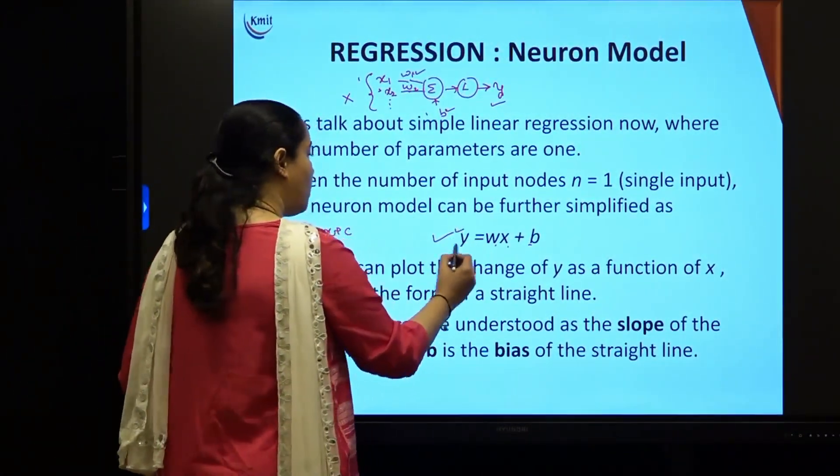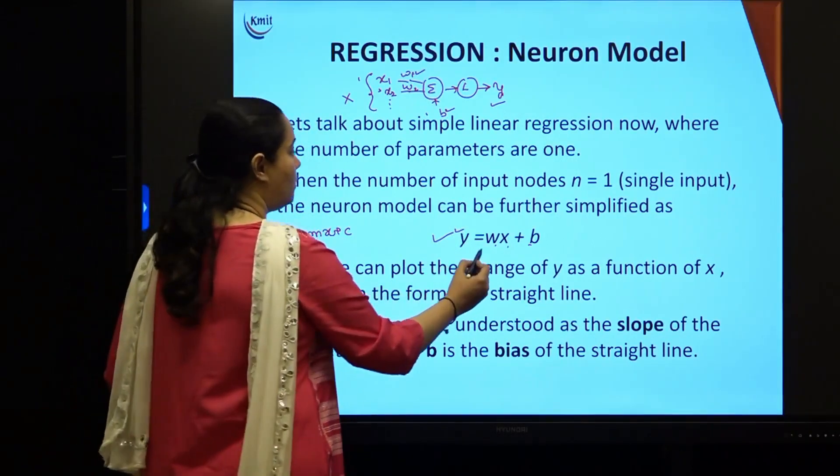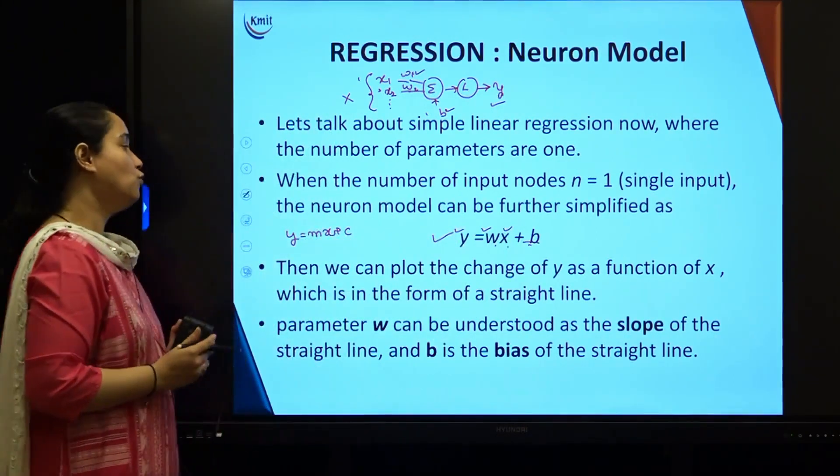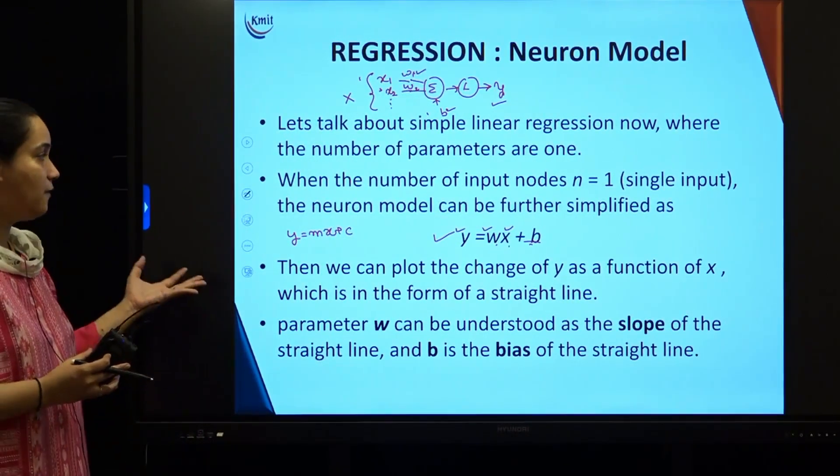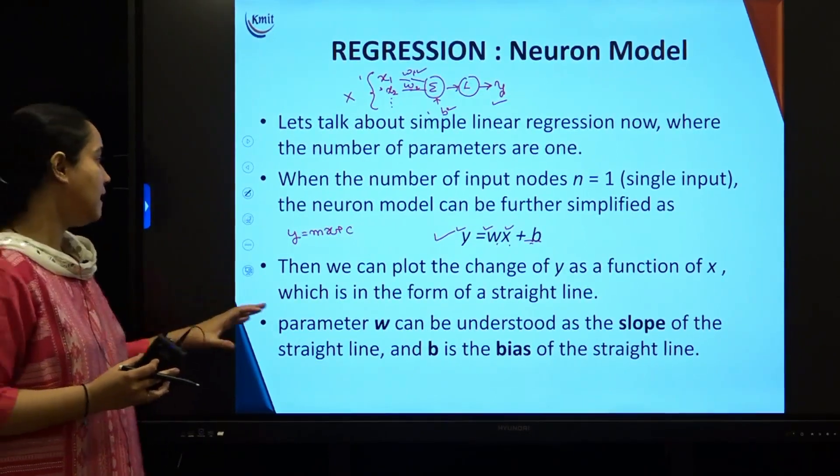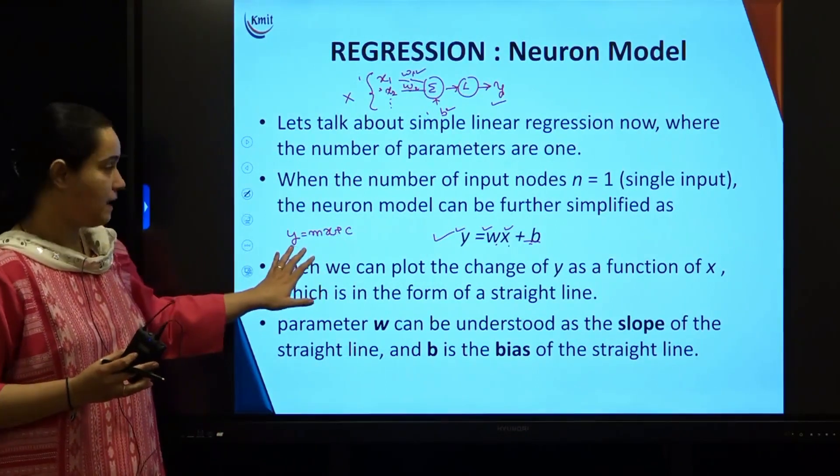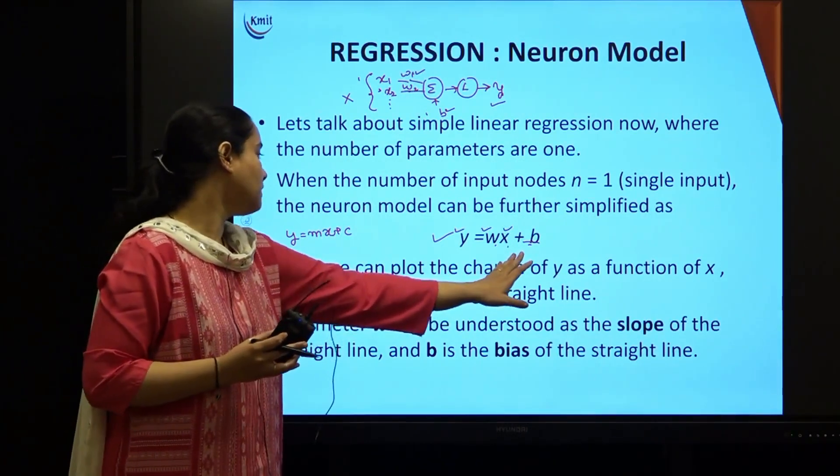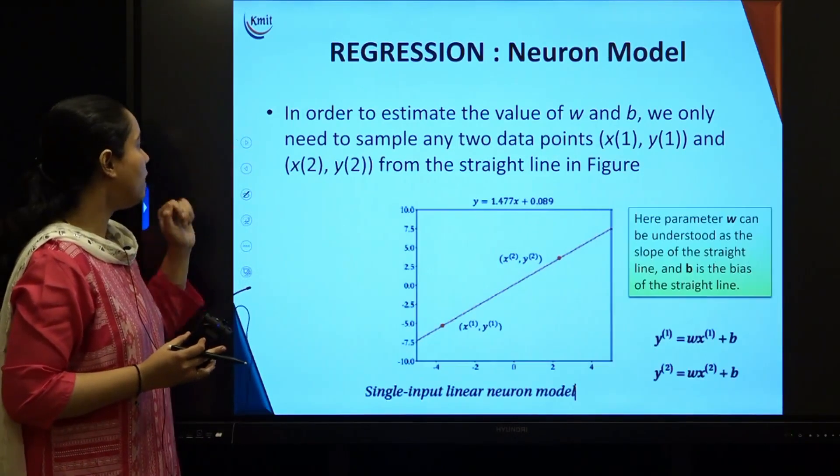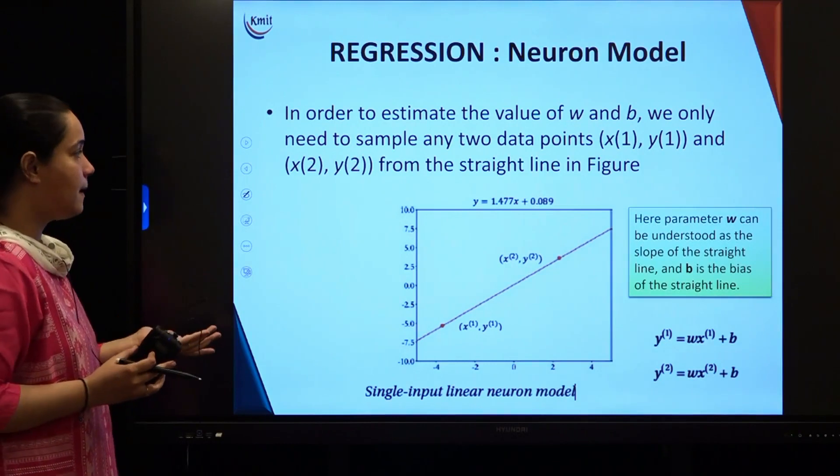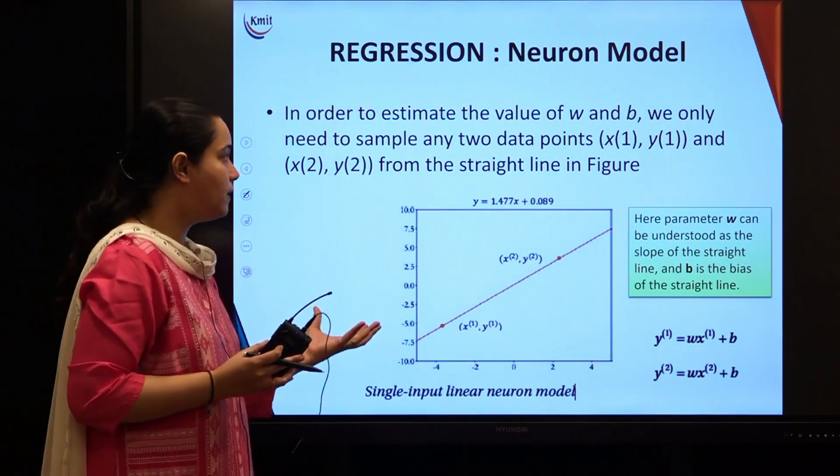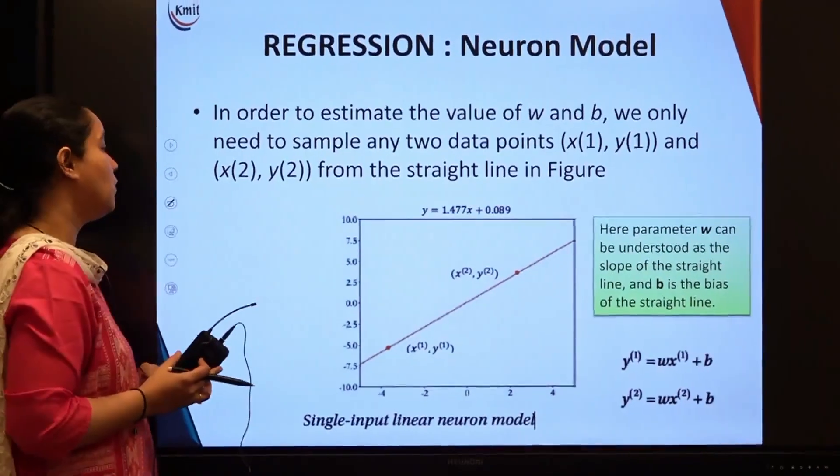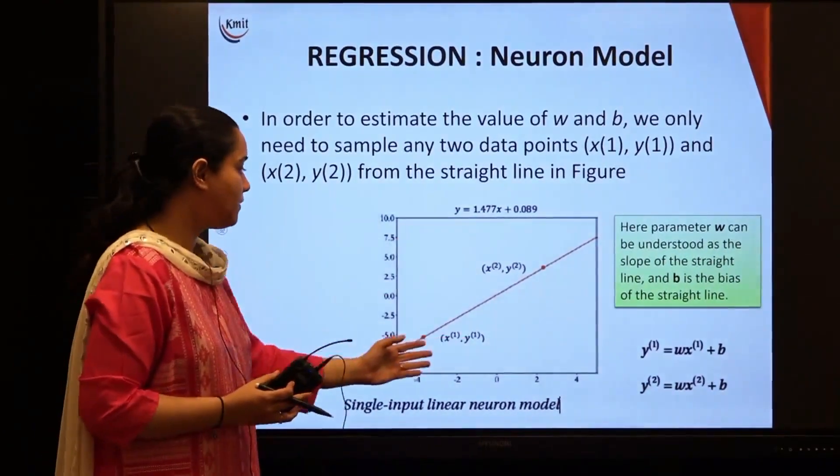How does y change? The y is going to change based upon the values of x, based upon the influence of weight and bias also. You can plot these changes of y as a function of x in the form of a straight line. If I draw this particular line, there are two points that we have picked up here: x1, y1 and x2, y2 in order to draw a straight line.